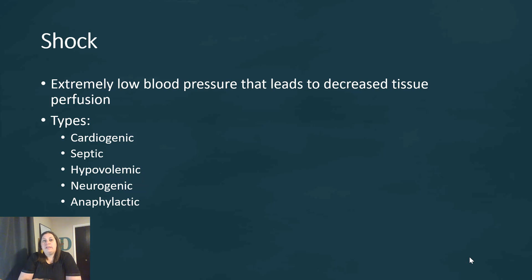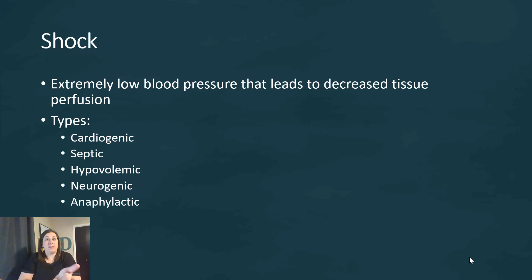Significant blood loss can lead to shock — extremely low blood pressure causing decreased tissue perfusion with insufficient oxygen and nutrients reaching the tissues. Types of shock include cardiogenic (heart unable to pump blood), septic (infected/toxic blood), hypovolemic (low blood volume from bleeding), neurogenic (nerve dysfunction impairing blood flow), and anaphylactic (severe allergic reaction).